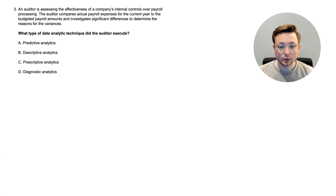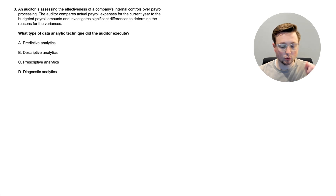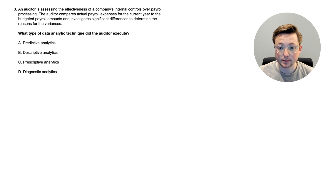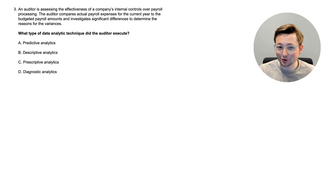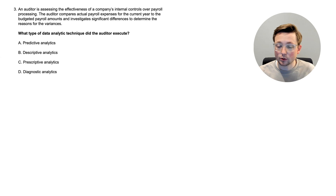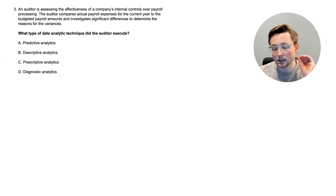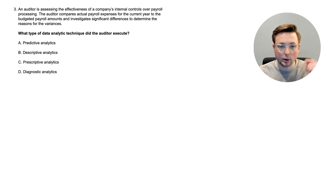Here we are at question three. What type of data analytic technique did the auditor execute? An auditor is assessing the effectiveness of a company's internal controls over payroll processing. The auditor compares actual payroll expenses for the current year to the budgeted payroll amounts and investigates significant differences to determine the reasons for the variances. Based on what we just learned, pause the video, think through the options — predictive, descriptive, prescriptive, or diagnostic — and try to identify which analytic is being performed, then come back when you're ready.